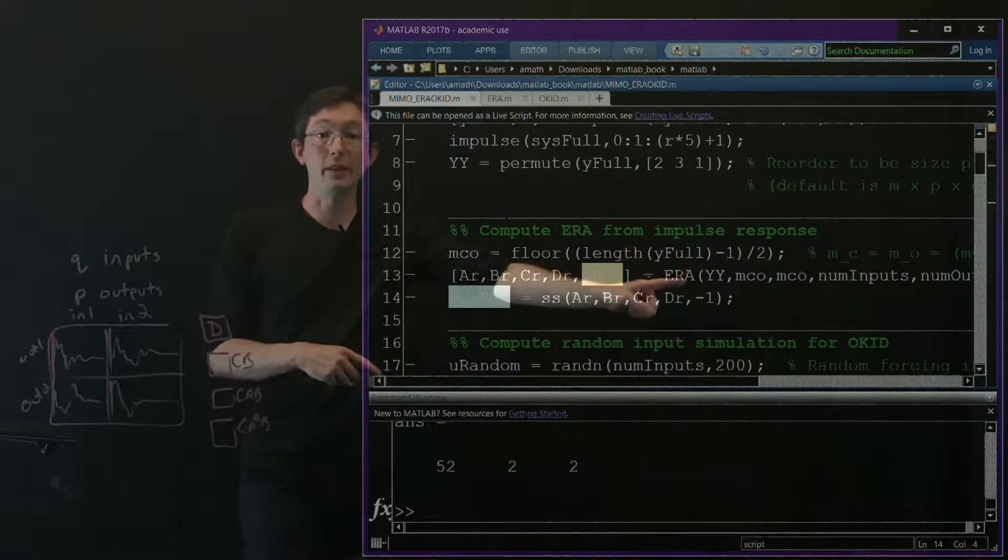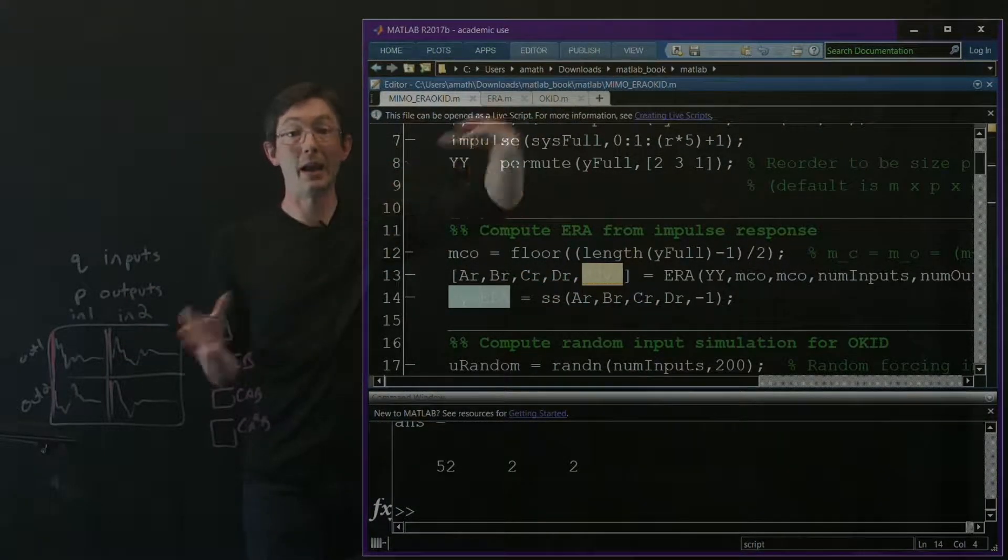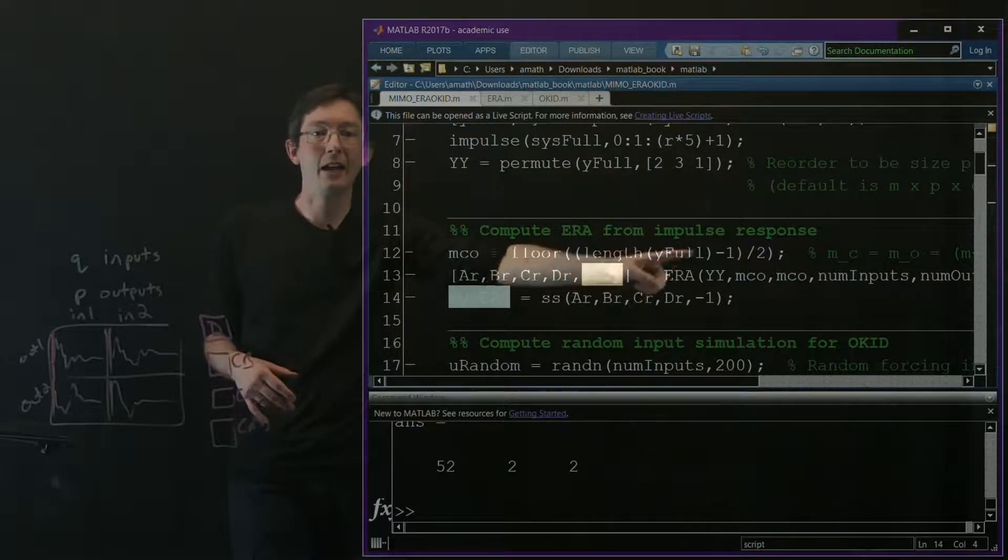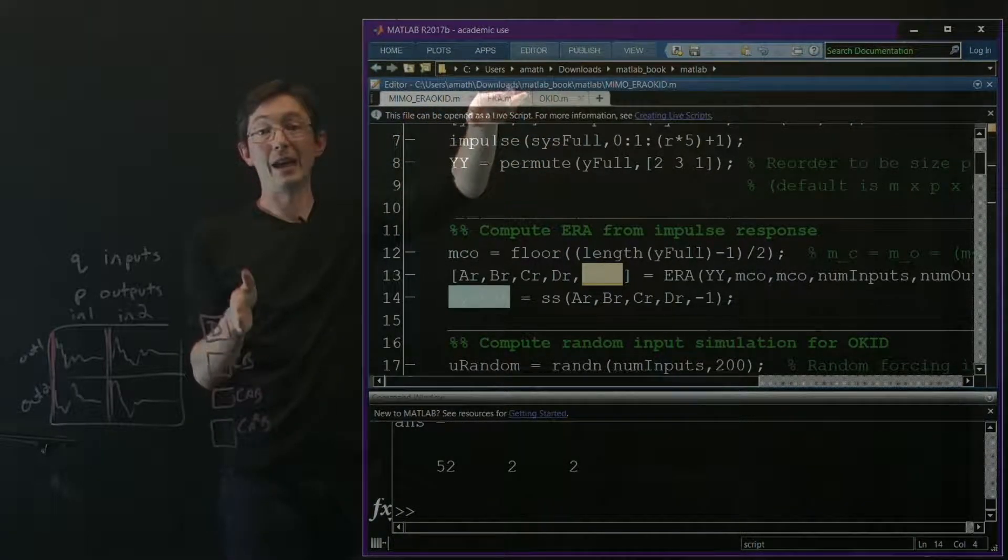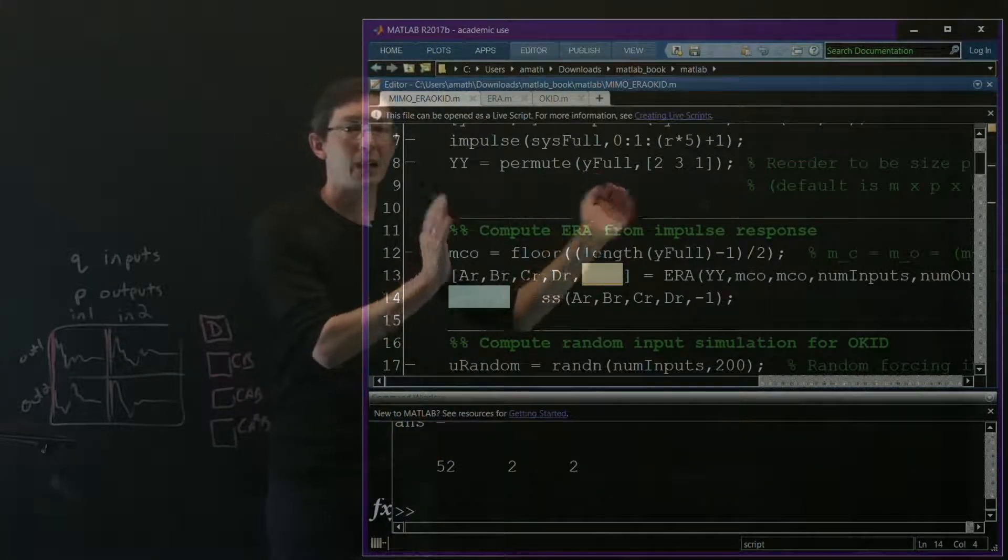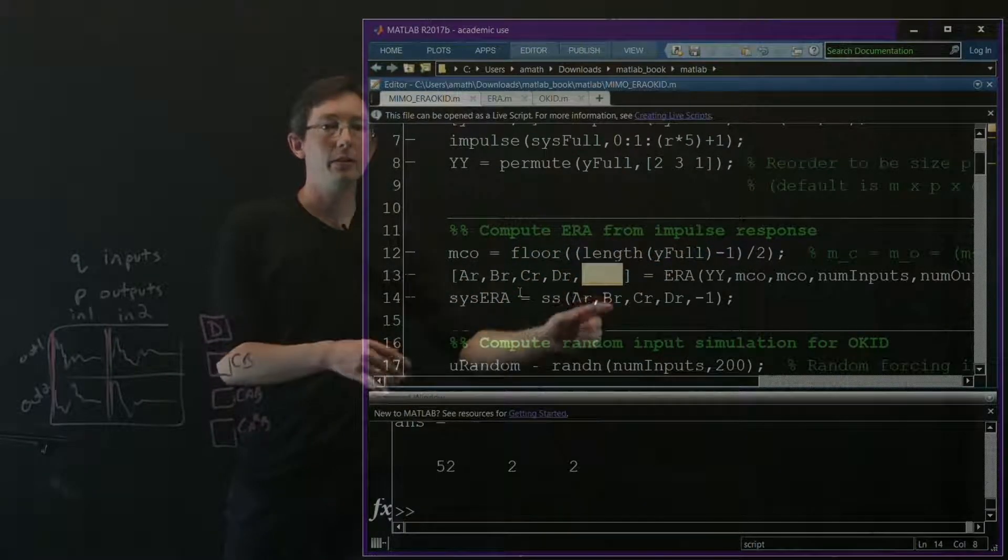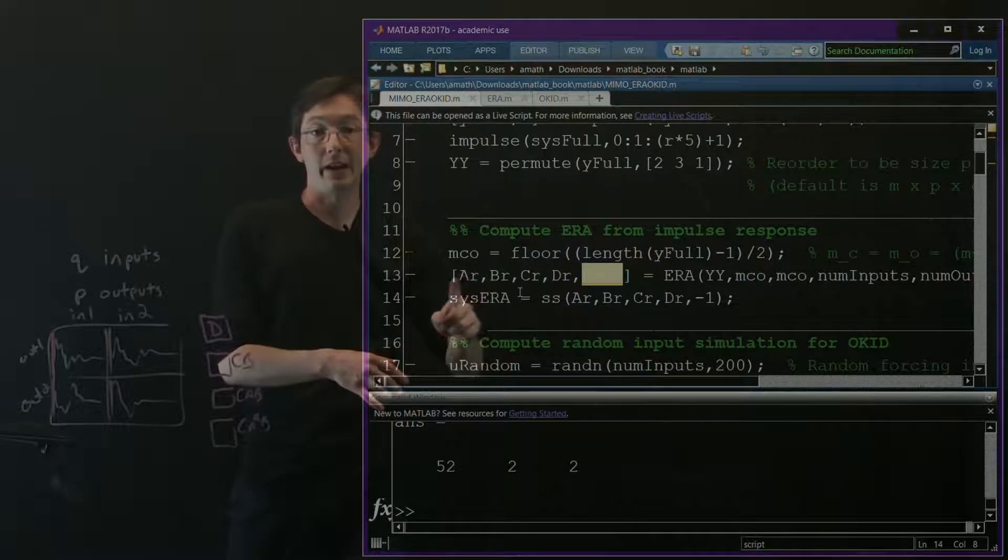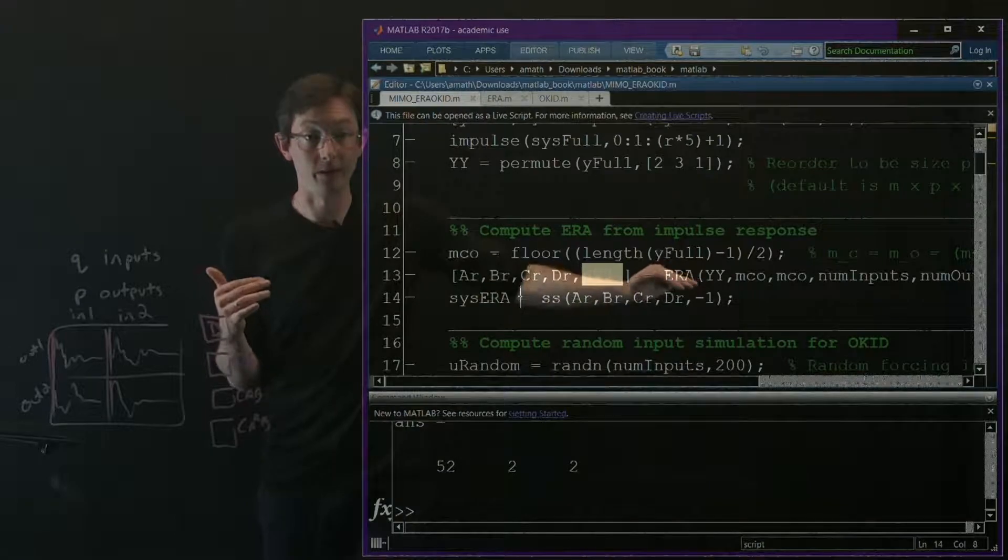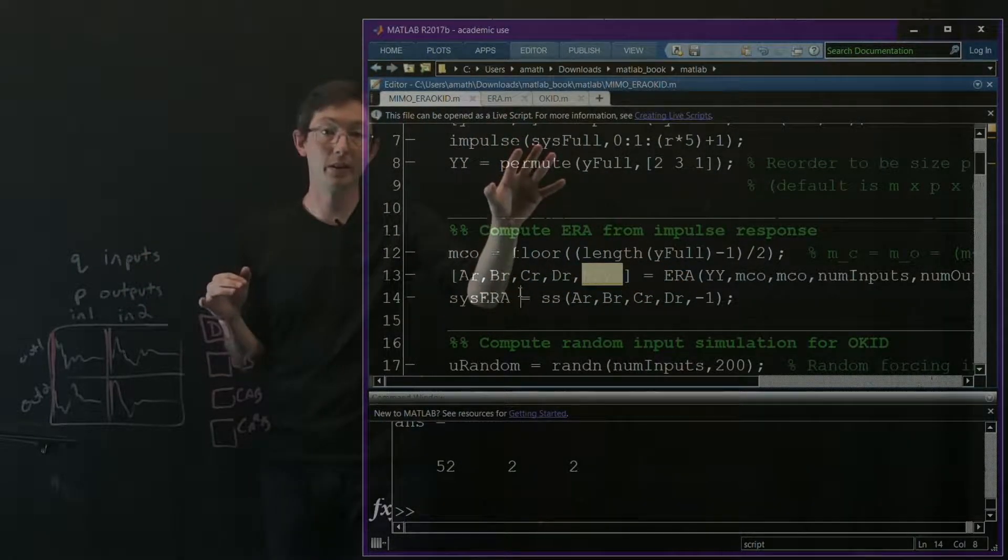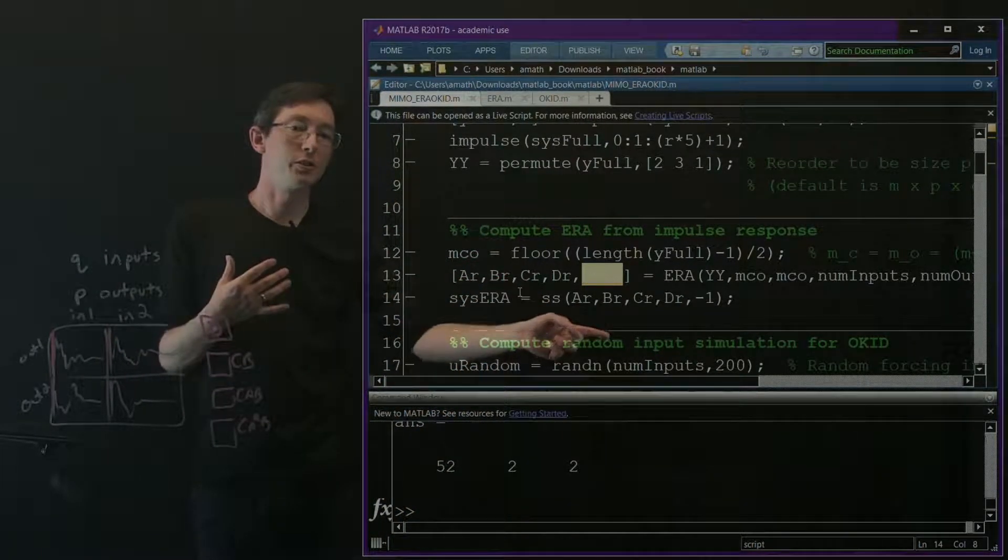Now you just run the ERA code, it's that simple. I'm making this mco variable which tells me how big to make my Hankel matrix. It's literally how much data I have minus one divided by two, because it's a symmetric matrix, so my matrix can only be half as big as the length of this time series. All I do is run this ERA code and I get A, B, C, and D matrices that I can build into a system. It's one line of code. You collect data, put it in the right form, run ERA, you have it.